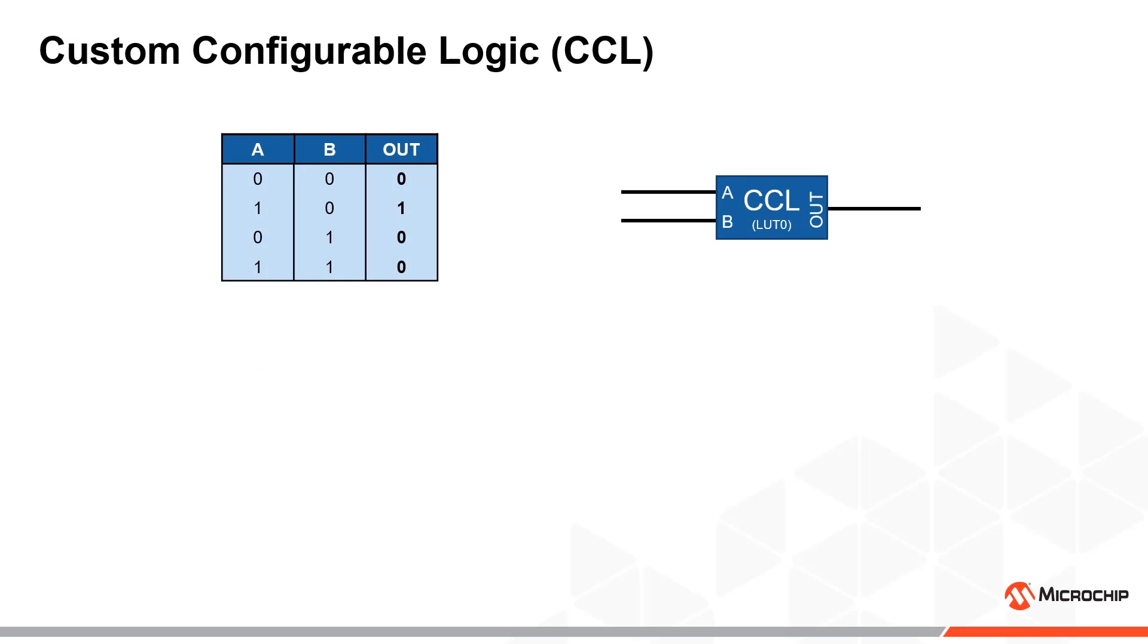The custom configurable logic, or CCL, allows us to define truth tables and simulate logic circuits. They can be used to turn a pin high or low depending on the state of two to three other signals.